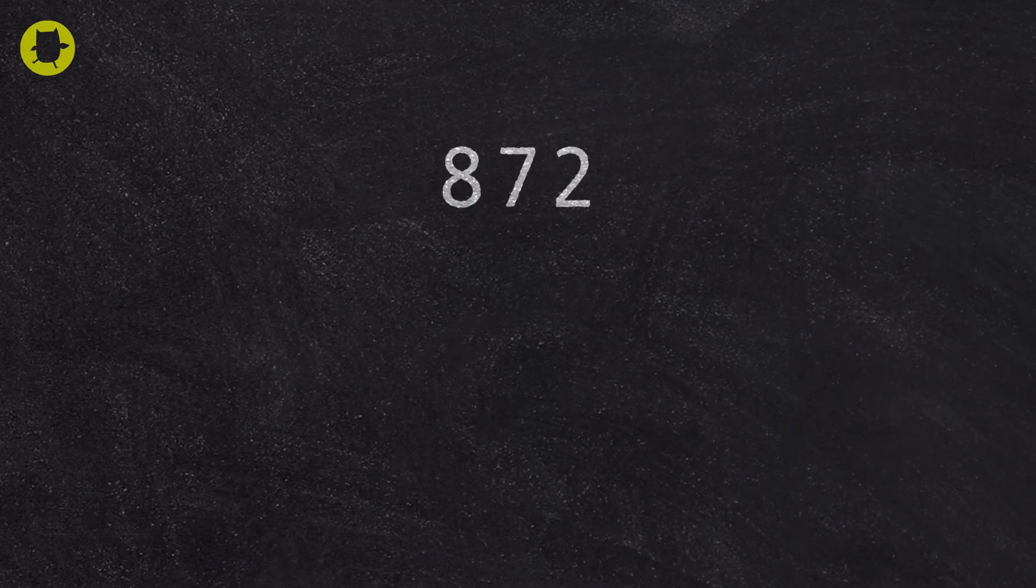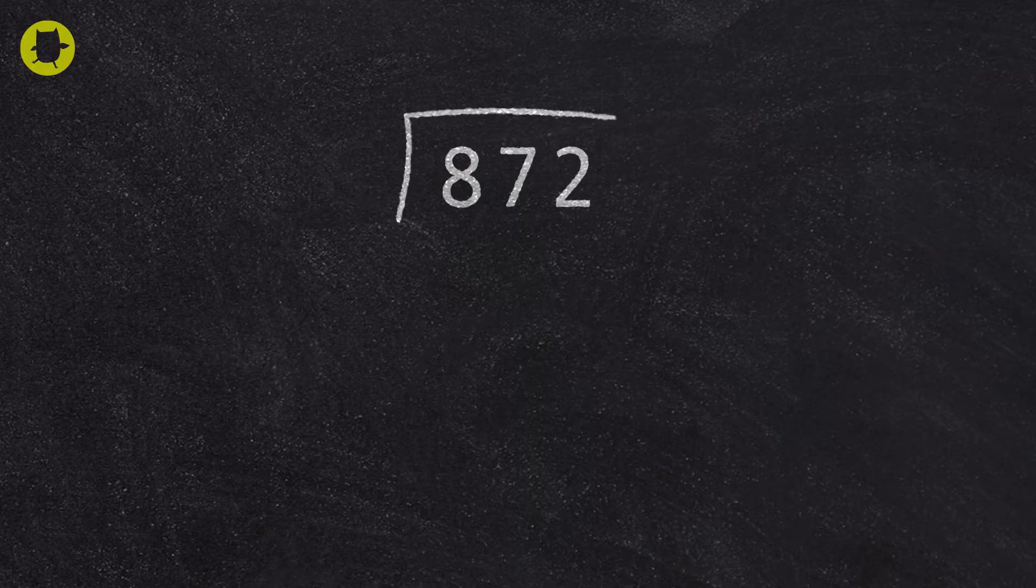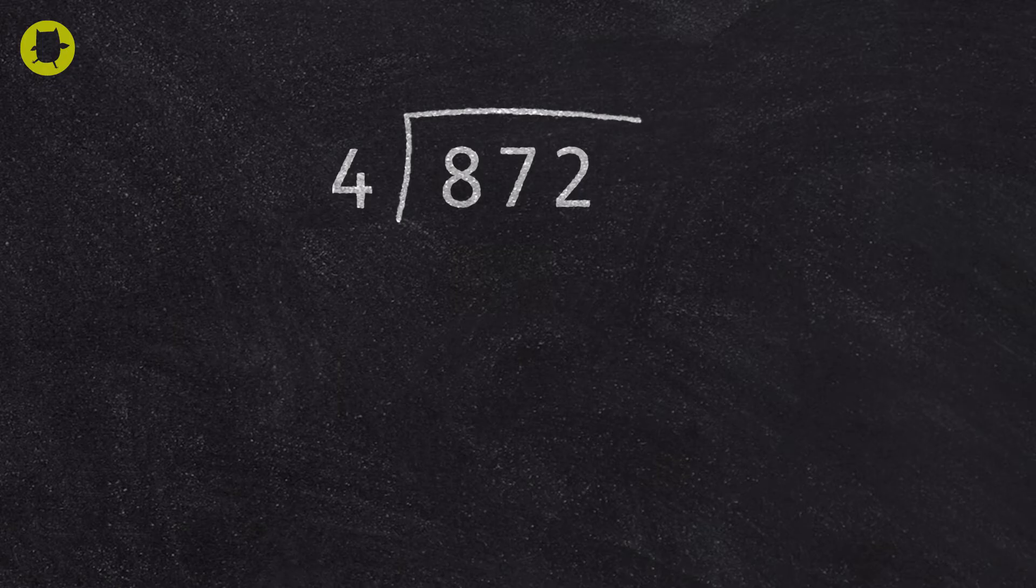When we look at division by chunking, it's important to always think how many of the divisor go into the dividend. So how many fours go into 872? We start by looking at multiples of 4 and think about what number we can multiply 4 by easily.